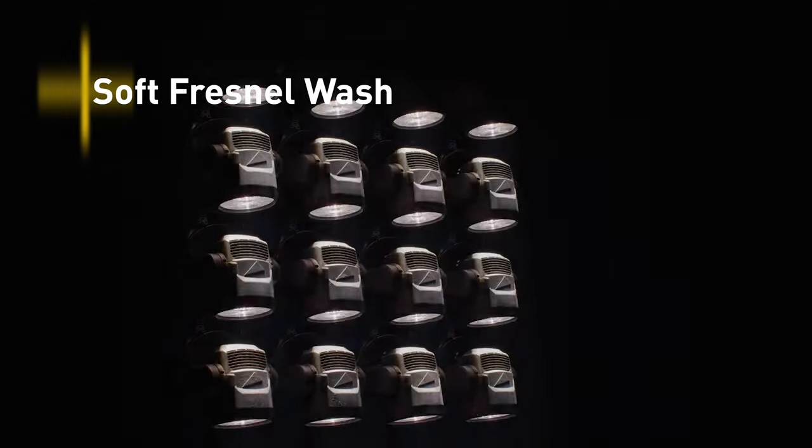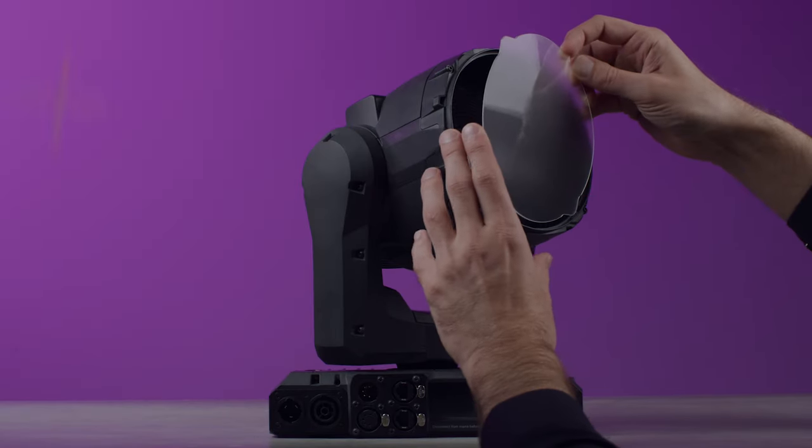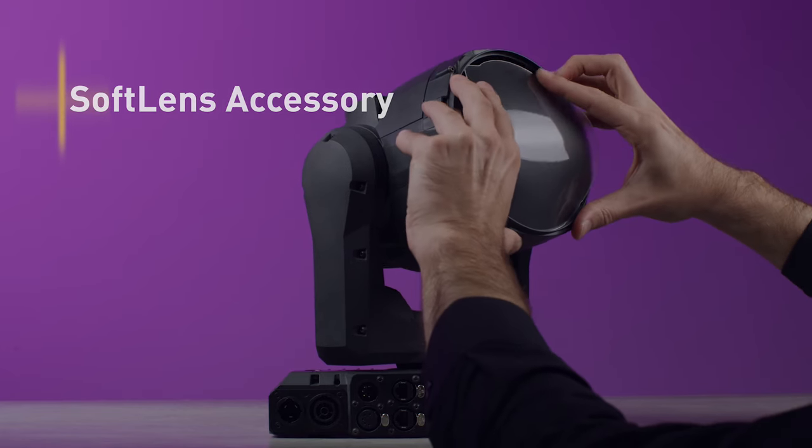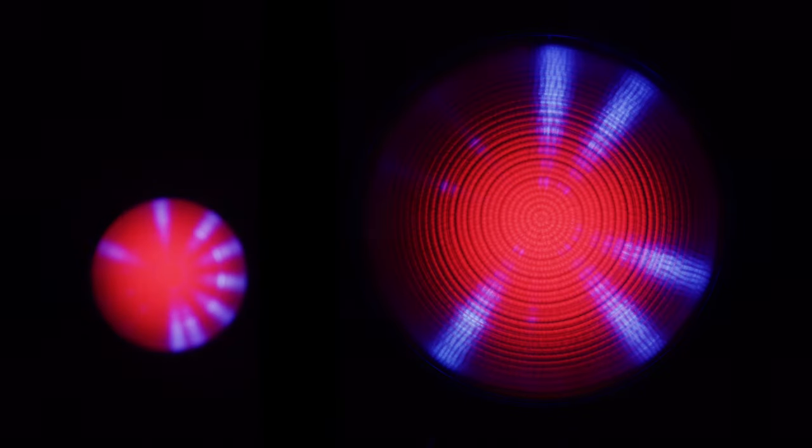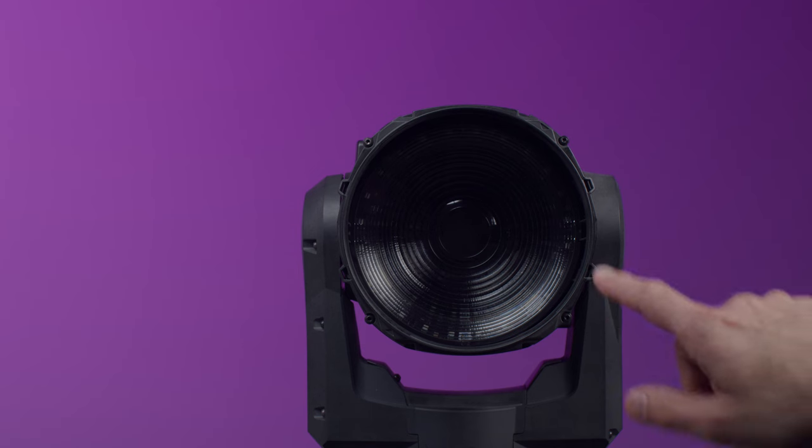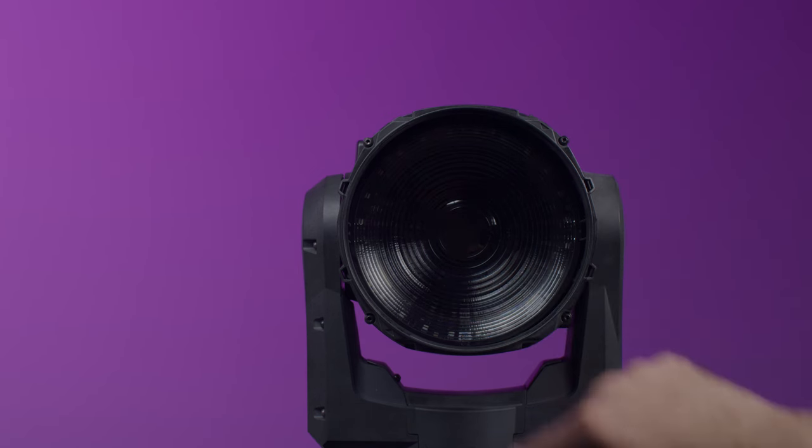The Fresnel lens in the front projects a beautiful soft-edged wash with zero color artifacts. For an even softer edge, the fixture comes with a soft-lens accessory included in the box, which snaps onto the fixture without requiring any tools. Mounting points for third-party beam control accessories such as top hats and concentric rings are also provided.